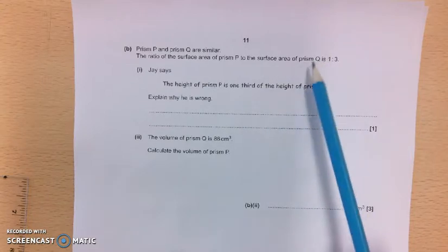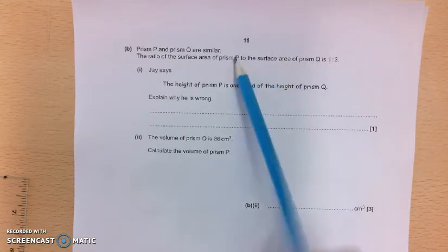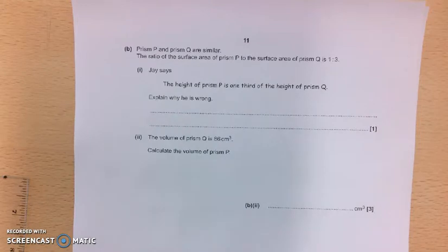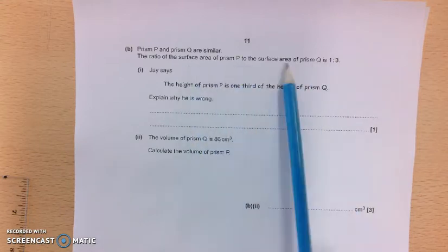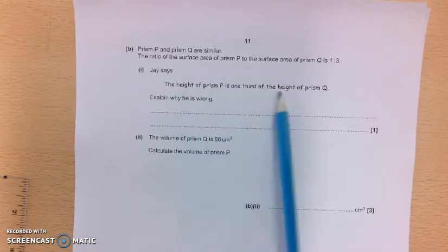So the surface area of prism Q is 3 times that of prism P. So J says the height of prism P is 1 third of the height of prism Q. And on the surface of it, that might look OK. But of course, this ratio here is for the surface areas, whereas this statement here is about the heights.